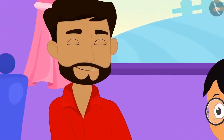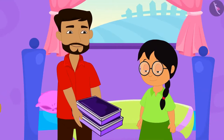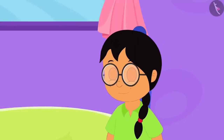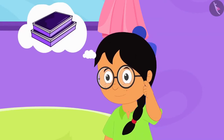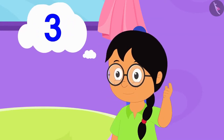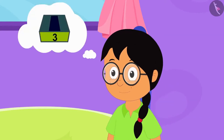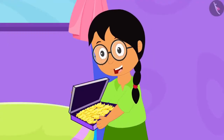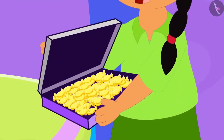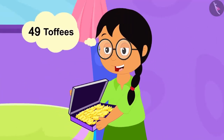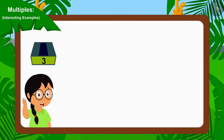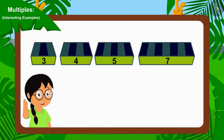Today, Meenu's uncle has come from abroad. He has brought various toffees for Meenu and her friends. Meenu is thinking that she will divide those toffees using groups of 3, 4, 5 or 7 in such a way that no toffee is left. Meenu opened a packet of pineapple toffees. It has a total of 49 toffees. Meenu is thinking which group of 3, 4, 5 or 7 should she use so that all toffees are distributed equally.